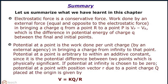Potential at a point is the work done per unit charge by an external agency in bringing a charge from infinity to that point. Potential at a point is arbitrary to within an additive constant, since it is the potential difference between two points which is physically significant. If potential at infinity is chosen to be zero, potential at a point with position vector R due to a point charge Q placed at the origin is given by V equals KQ by R.